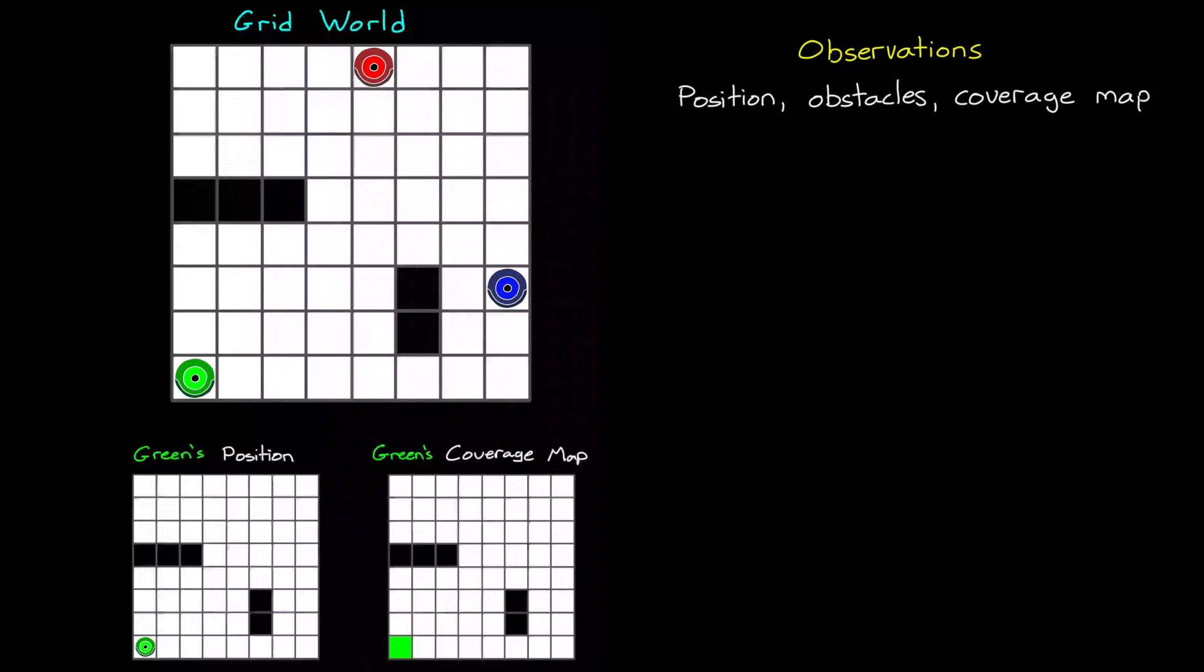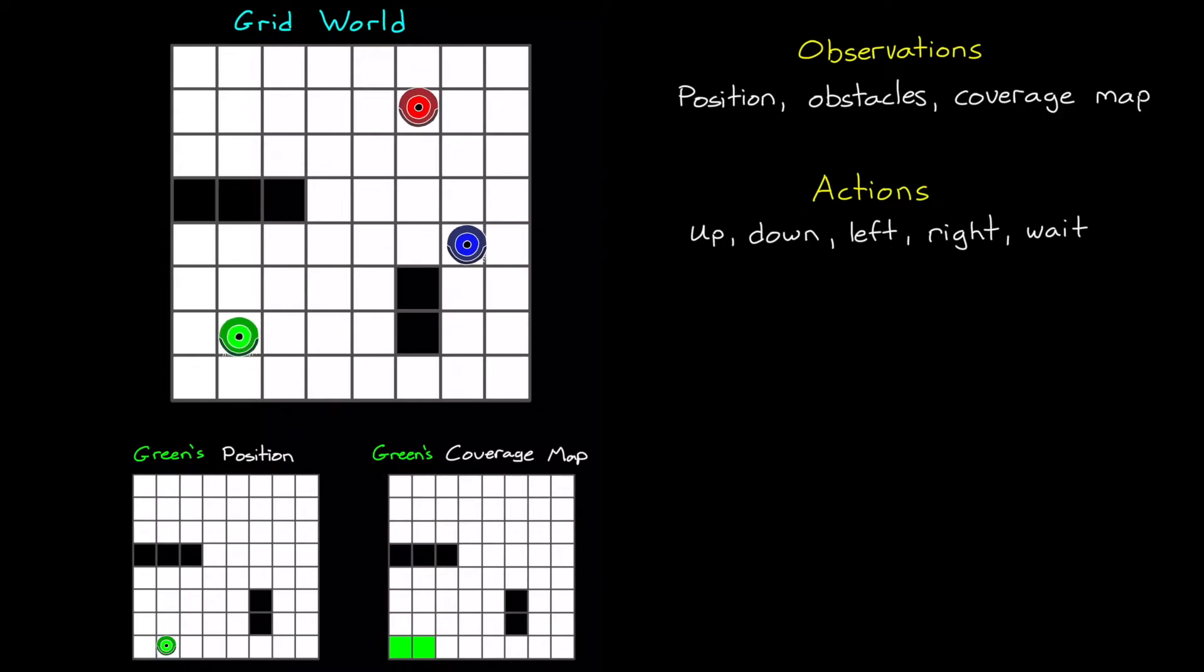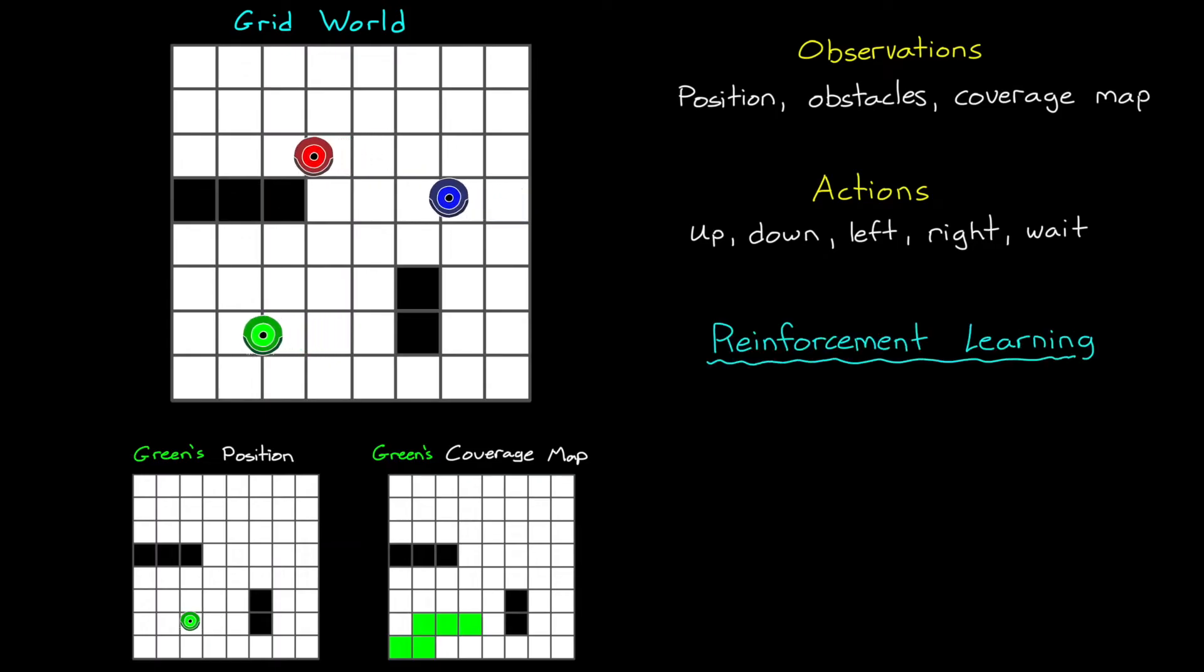Now, using this information, the green vacuum determines one of five actions to take. Move up, down, left, or right, or just wait in its current spot until the next time step. And so, obviously, the idea would be that, for each time step, each vacuum moves to a square that hasn't been covered yet. But, the vacuums aren't programmed ahead of time with knowledge of which actions are the best to take, and instead use a reinforcement learning algorithm to learn the optimal policy over time. And, it does this by maximizing rewards.